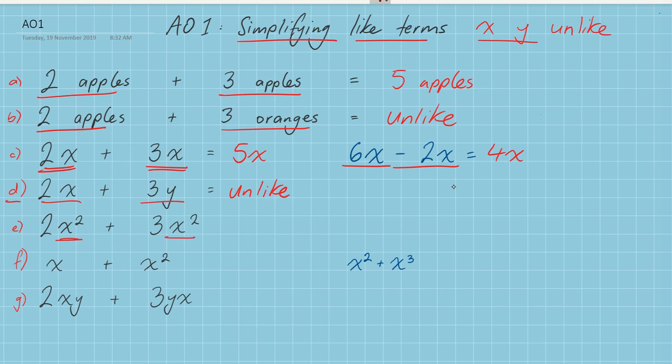In this case here, I'm dealing with X squared and X squared. These are like terms, so I can add these together. Two X squared plus three X squared is going to give me a total of five X squared.